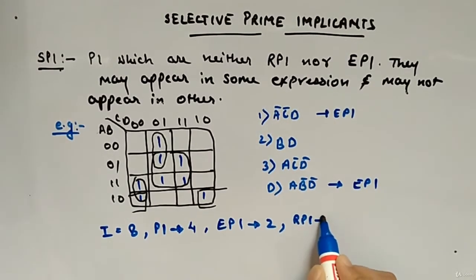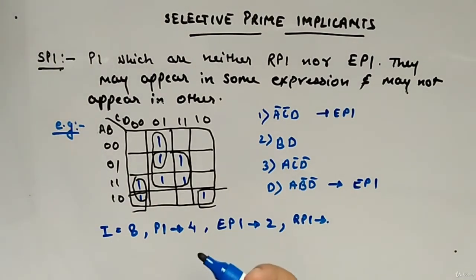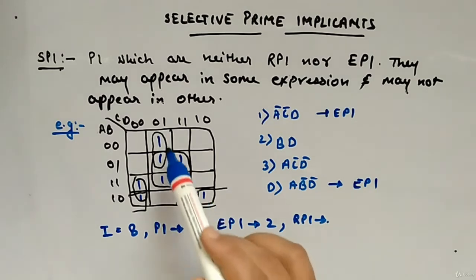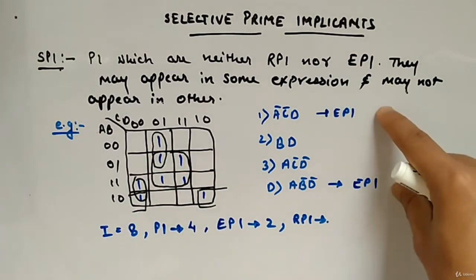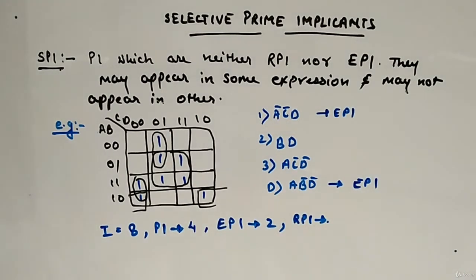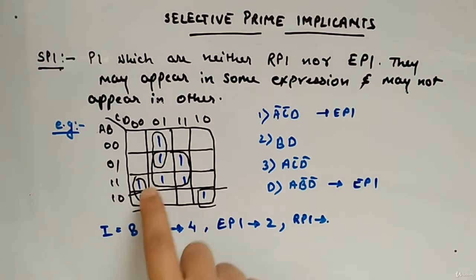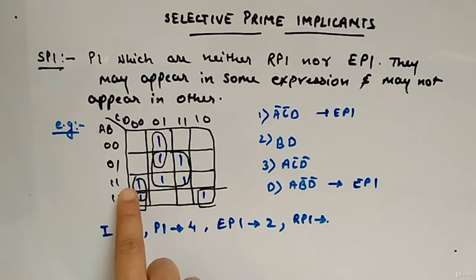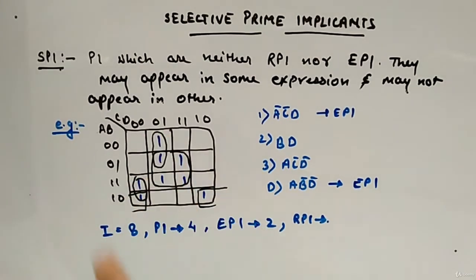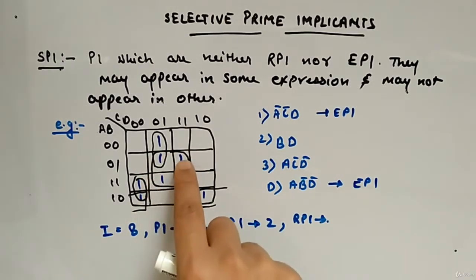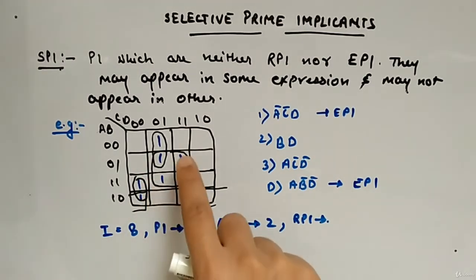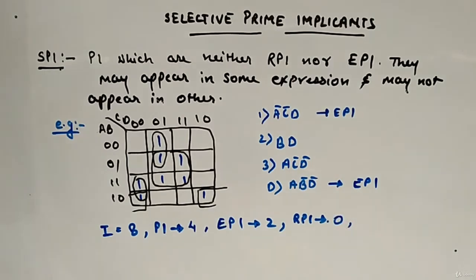What about redundant prime implicants? Redundant prime implicants are those groups where each of the min terms should be part of essential prime implicants. These two groups are the only essential prime implicants. If you look at this group, this min term is not a part of an essential prime implicant, hence this will not be a redundant prime implicant. And for the remaining group, these three min terms are not part of an essential prime implicant. Hence, redundant prime implicants is zero.